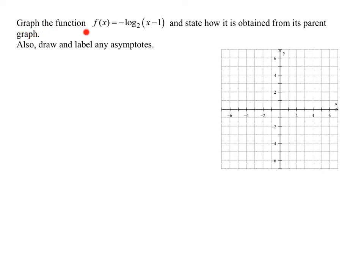In this problem, we need to graph the function f of x equals negative log to the base 2 of the quantity x minus 1. We must state how it's obtained from its parent graph. We also need to draw and label any asymptotes.